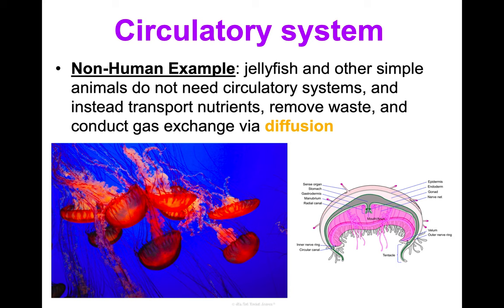The integumentary system's main function is to act as a barrier protecting the body from the outside world, regulate temperature, and control water loss. We'll discuss it more when we get into the immune system and our mini unit on pathogens, because your skin is one of your greatest barriers to staying healthy. Key structures include skin, hair, nails, and associated glands like sweat glands. Non-human examples include scales, slime, hooves, feathers, and fur — all making up other animals' integumentary systems, making it a very diverse organ system.